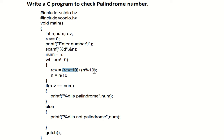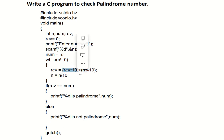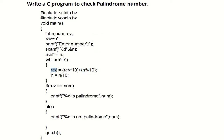Zero into 10 is zero. Then plus n modulo 10. Assuming n is 121: 121 modulo 10 gives remainder 1. So the answer is zero plus 1, which is 1. The new value of reverse is now 1. Next, n is equal to n divided by 10. When it comes to division we check for the quotient, and when it comes to modulo we check for the remainder. So 121 divided by 10 gives quotient 12. Latest value of reverse is 1, latest value of n is 12.